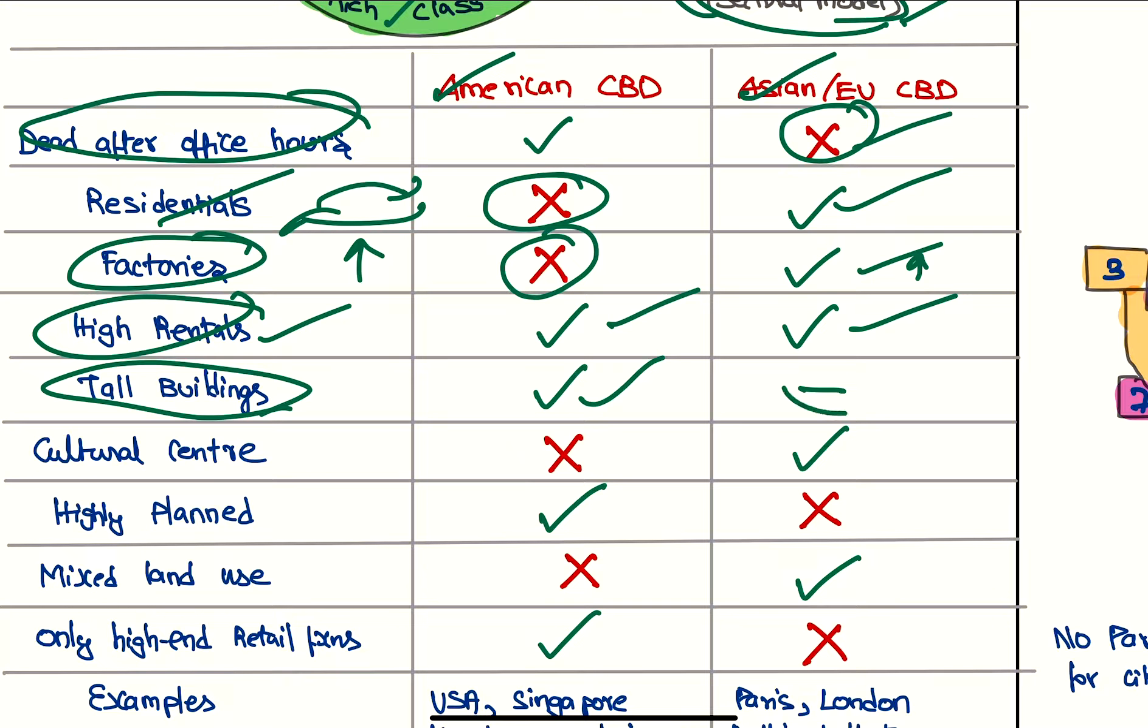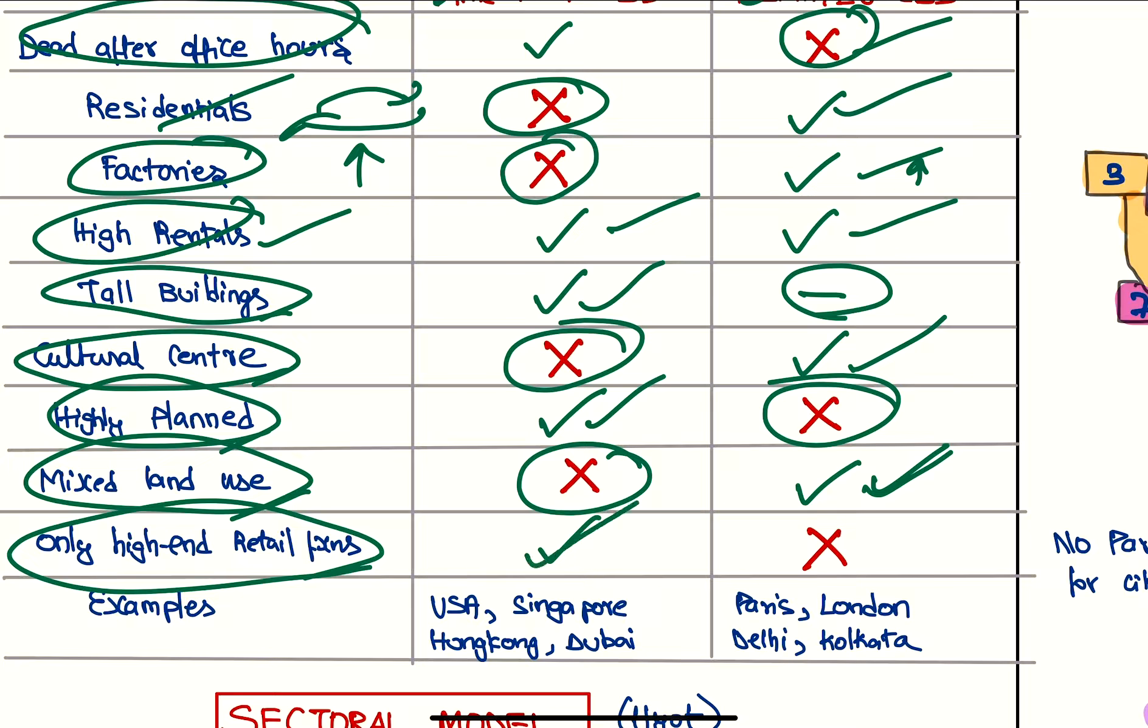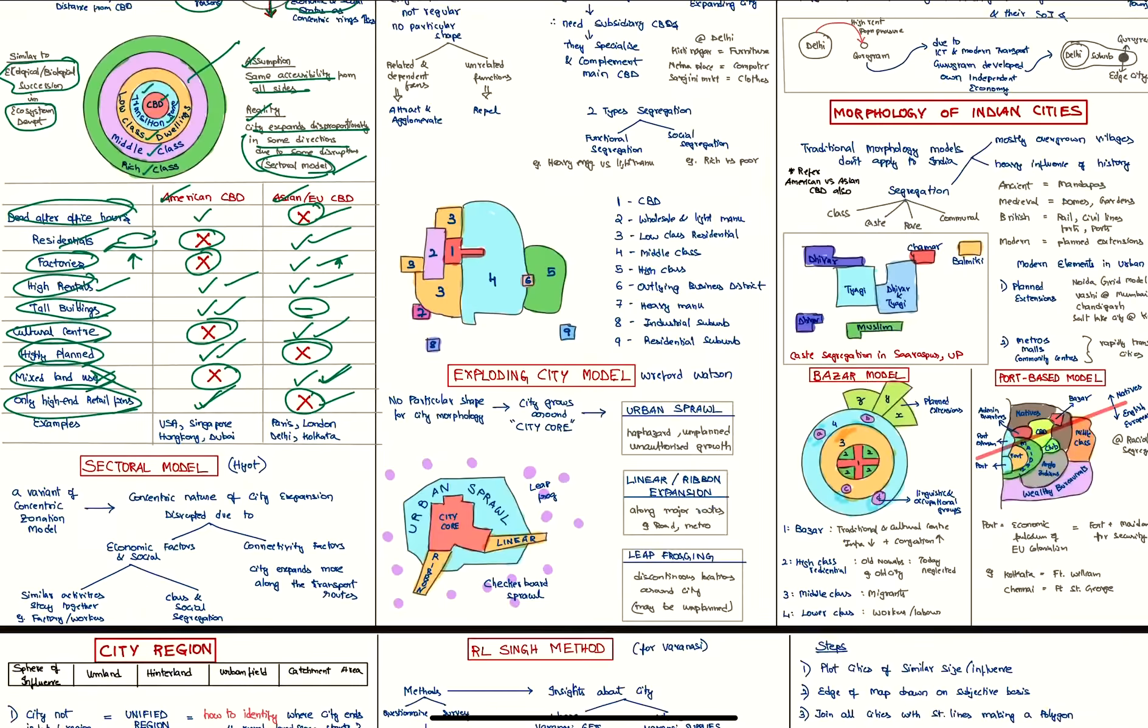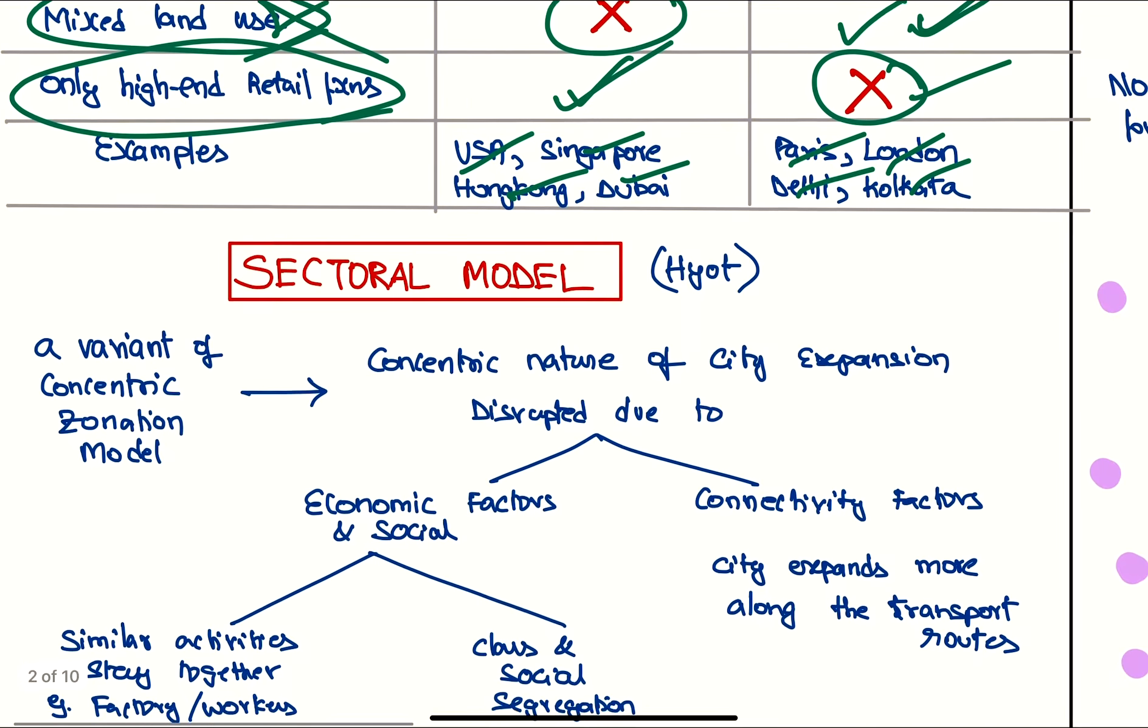Tall buildings will be more in American CBD. Asian/European CBD won't have as many tall buildings - it is a cultural center. American CBD is dead after night, it's only a working place. American CBDs are highly planned, Asian/European are not planned. In Asian/European CBD there is mixed land use because of history and culture. In American CBD, only high-end retail firms work; in Asian/European CBD, all types of mixed land use is seen. Examples are USA, Singapore, Hong Kong, and Dubai for American type; Paris, London, Delhi, and Kolkata for Asian/European type.